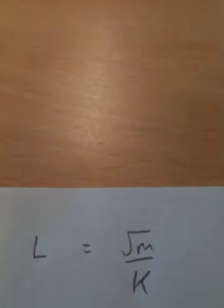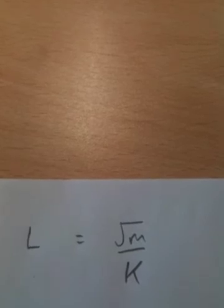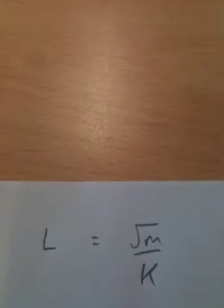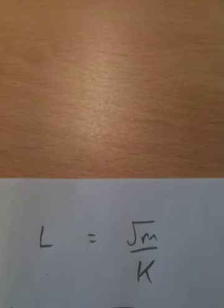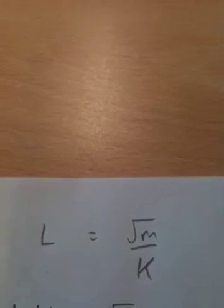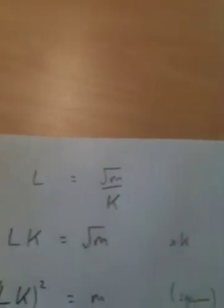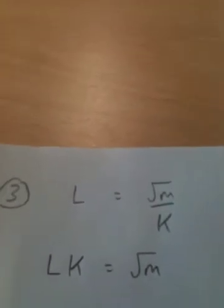Question number three. Rearrange to make m the subject of the formula. What I'm going to do first is multiply both sides by k, or if you like to think of it as cross-multiplying, bring the k from the bottom on this side of the equal, on the right-hand side of the equal sign, up to the top on the left-hand side. So, we get lk equals root m.